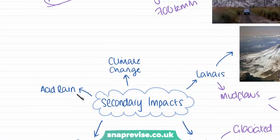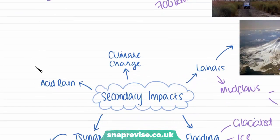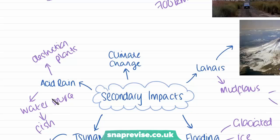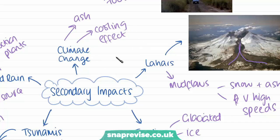We also have acid rain as a secondary effect. This is when gases released — especially sulfur dioxide — combine with rain and form acid rain. Acid rain can lead to the destruction or killing of plants, damage water sources, kill fish and deplete fish stocks, and pollute the water, so it's very bad for the environment. Finally, we have climate change. When ash is emitted from the volcano, it can go into the sky and block solar radiation from reaching and warming the planet, causing a cooling effect, because these massive clouds of ash will stop the sun reaching the Earth.